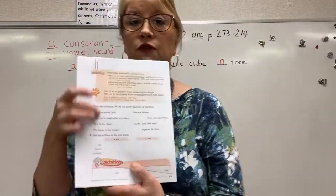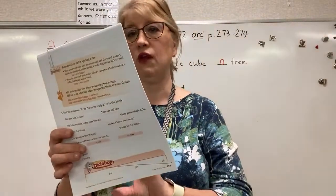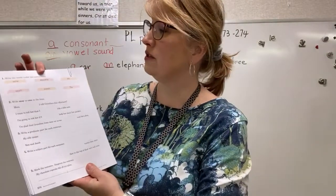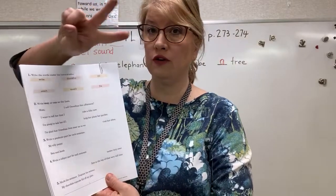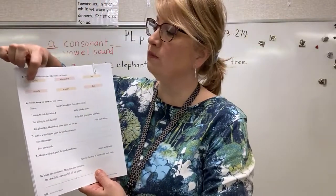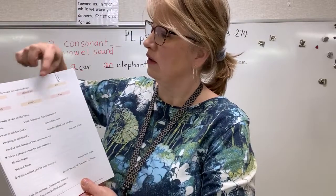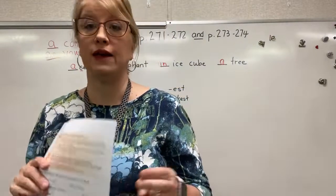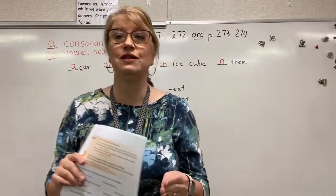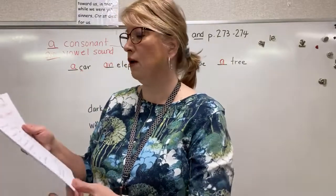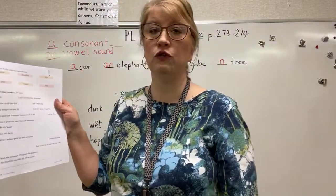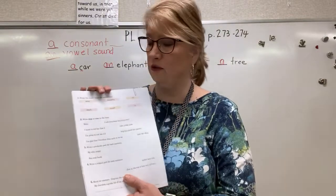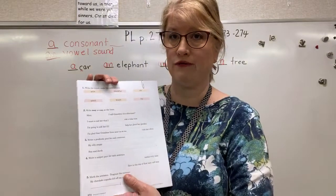On the back you will be using your contractions — write the two words under each contraction, so 'we're' would be 'we are.' Then use 'may' or 'can' on the lines. Remember, 'may' is asking permission and 'can' is your ability to do something. For example, 'Mom, blank I call grandma this afternoon?' — since you are asking your mom's permission, you put 'may': 'Mom, may I call grandma this afternoon?'